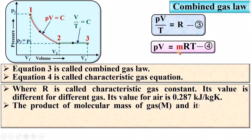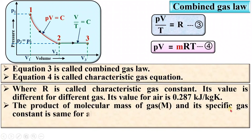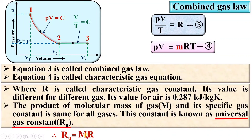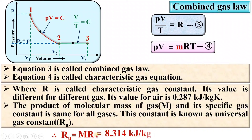The product of the molecular mass of the gas and its specific gas constant is the same for all gases. This constant is known as the universal gas constant. Mathematically, the universal gas constant Ru is equal to mR, where m is the molecular mass and R is the characteristic gas constant. This universal gas constant is always equal for all gases, whereas R is different for different gases. The universal gas constant is 8.314 kJ per kg mol Kelvin.